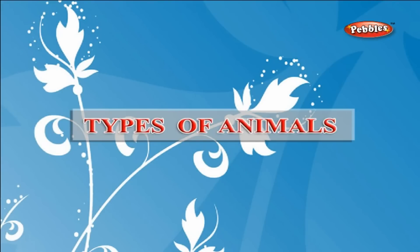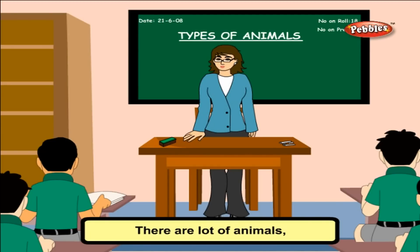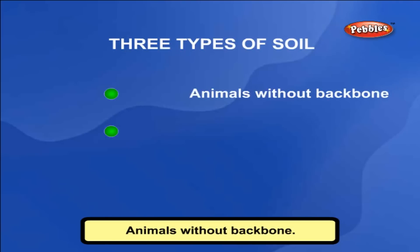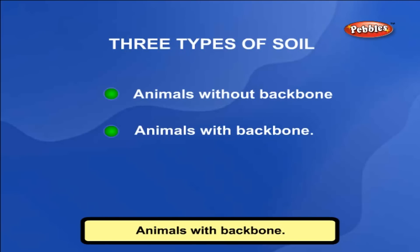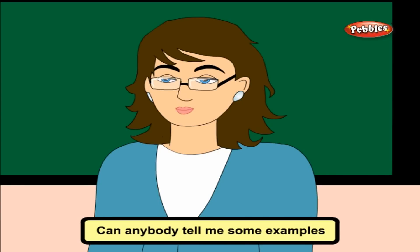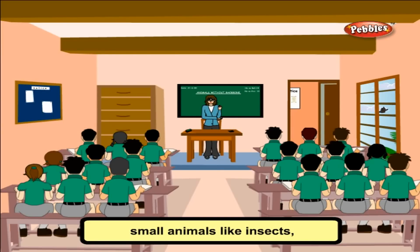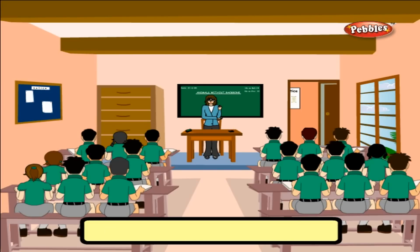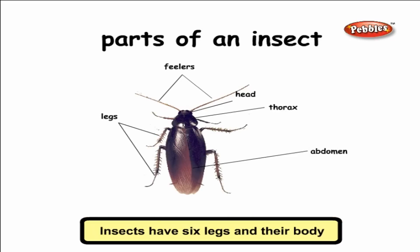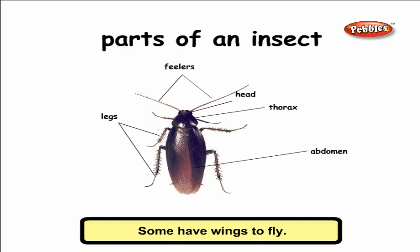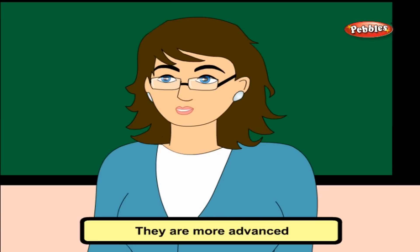Types of animals: there are a lot of animals. To study them, they are divided into two main groups — animals without backbone and animals with backbone. Animals without backbone: some examples are cockroach, housefly, and mosquito. Small animals like insects, worms, scorpions, snails, etc. do not have backbone. Insects have six legs and their body is divided into head, thorax, and abdomen. Some have wings to fly.